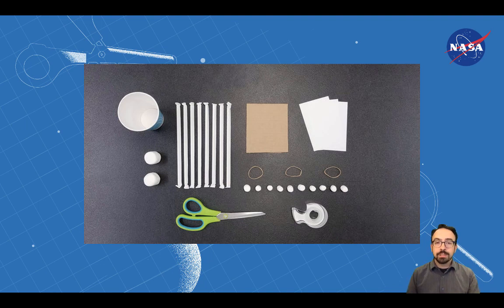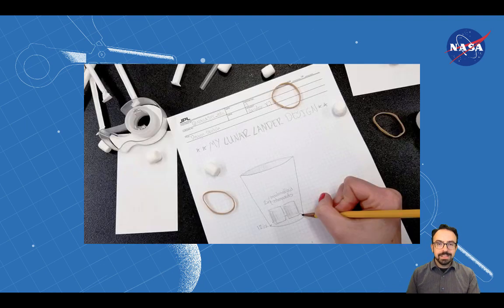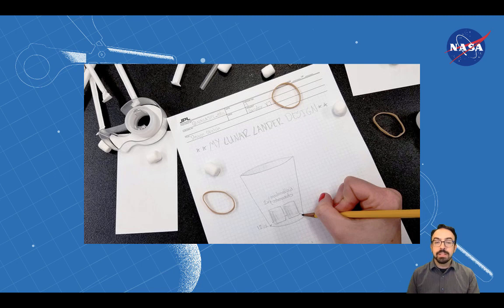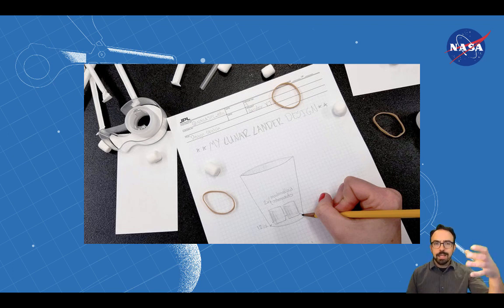You'll want to start by brainstorming ideas. First, design a shock absorbing system. Think of things that absorb energy or provide cushion. Then you're going to build, test, and evaluate your astronaut lander by dropping it, starting with low heights and working your way up.